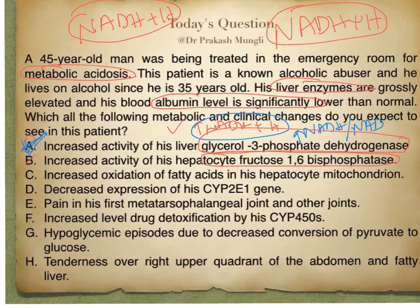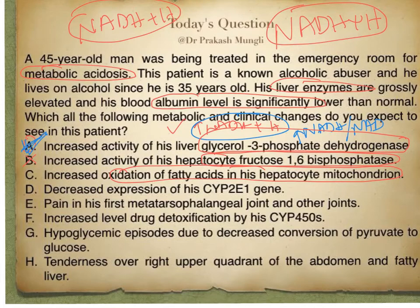Option C says increased oxidation of fatty acids in hepatocyte mitochondria. Beta-oxidation of fatty acids requires NAD⁺. Since there is a shortage of NAD⁺ in alcoholics (due to excess NADH), beta-oxidation slows down. Therefore, Option C is incorrect — fatty acid oxidation is not increased.